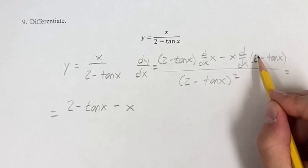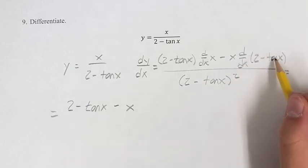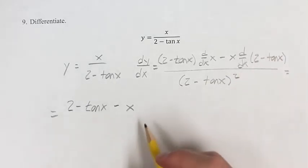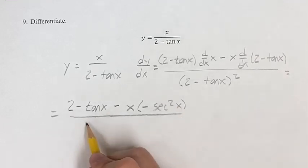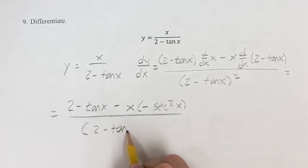the derivative of 2 is just 0, so we can ignore it, and then the derivative of negative tangent x is negative the derivative of tangent, which is secant squared x. This is over 2 minus tangent x,